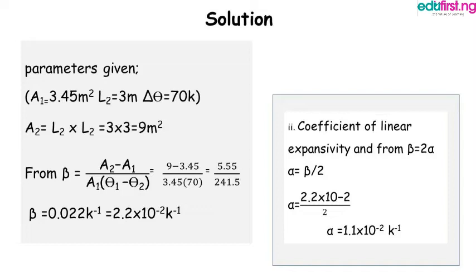Substituting into the formula: (9 minus 3.45) all over 3.45 multiplied by 70, which equals 5.55 over 241.5. Therefore beta, the area or superficial expansivity, equals 0.022 per Kelvin, or in standard form: 2.2 times 10 to the power minus 2 per Kelvin.